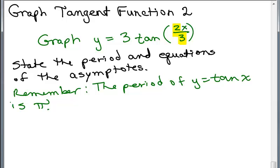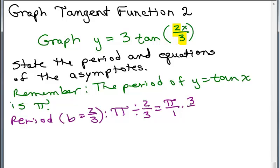So in this particular problem, first we know that b equals 2 thirds. So we need to do pi divided by b. So it's pi divided by 2 thirds, which is pi times 3 halves. And that gives you 3 pi over 2. So the period for y equals 3 tangent of 2x over 3 will be 3 pi over 2.